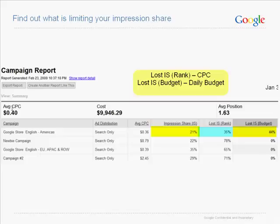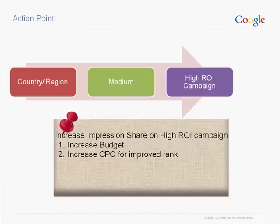With these two actionable insights, we now know: if we raise bids and/or improve quality score, we'll recover impression share lost by rank; and with a budget increase or reallocation, we'll gain more share of voice. More impressions mean more exposure, which leads to more clicks, and more clicks will yield more conversions. In summary, increase impression share on high-ROI campaigns by either increasing budget or increasing CPC for improved rank.